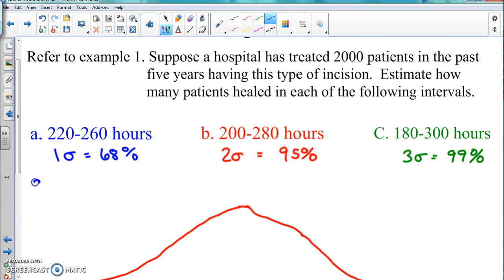We're going to do 2000 times 68 percent. That's going to be 2000 times 0.68. I want to do the same thing for each one of these so we can visually see what's happening.